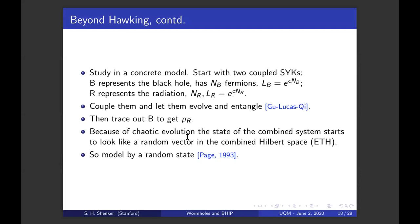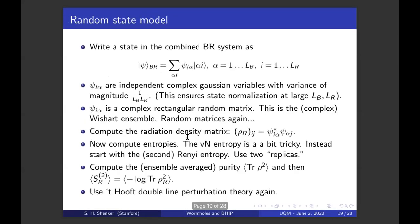Well, a long time ago, over 30 years ago now, almost 30 years ago now. Now write a state in this combined black hole radiation system, the BR system, as some coefficient functions times these product basis states. These numbers, psi I alpha, are independent complex Gaussian variables and the variance is of magnitude this much. This is enough to ensure state normalization if these dimensions are large enough. Now, this is a thing with two indices, but the dimensions are different. It's a rectangular complex matrix. This is called a complex Wishart ensemble. So again, we're dealing with random matrices.